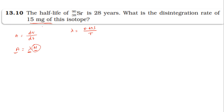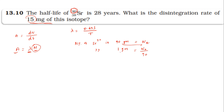To find N, we need the mass number of the element. The number of particles of Sr-90 in 90 grams equals Avogadro's number. So the number of particles in one gram is Avogadro's number divided by 90. We calculate the number of particles of Sr-90 in 15 milligrams.